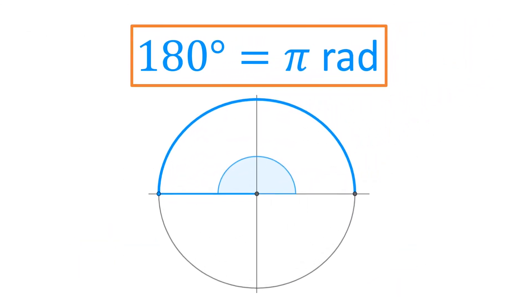180 degrees is π radians. That's it, folks. Hope it was useful. In the next video, we're going to learn how to find exact values for sine, cos, and tan.